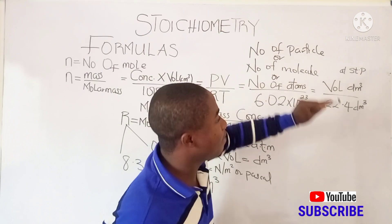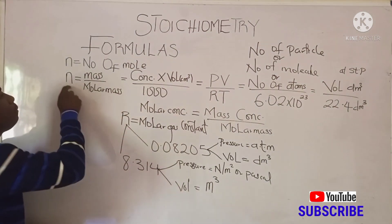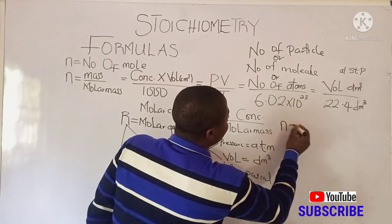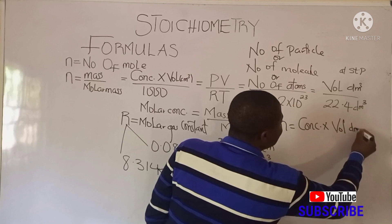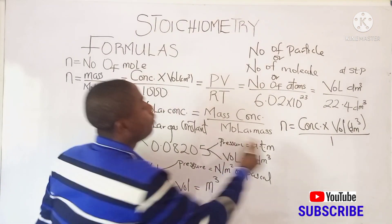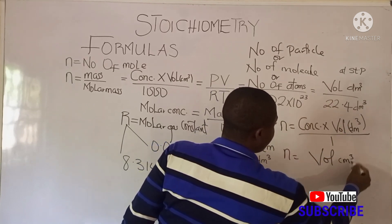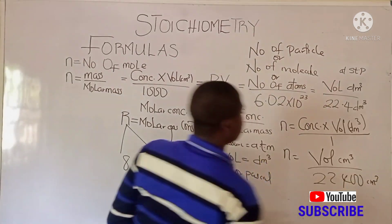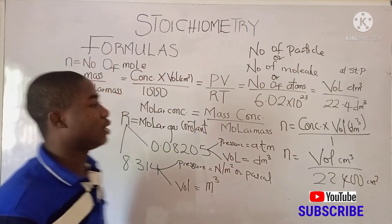Lastly, number of moles at STP is given as: n = volume in dm³ / 22.4 dm³. It must be noted that when volume is in dm³, we use concentration × volume directly without dividing by 1000. But when volume is given in cm³, we divide by 1000. At STP, the equivalent volume becomes 22,400 cm³.